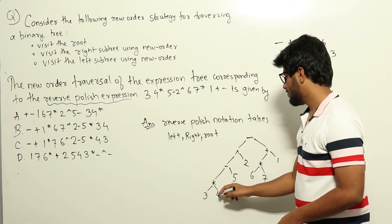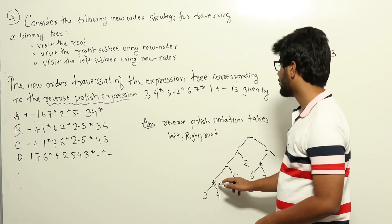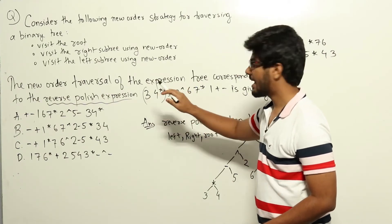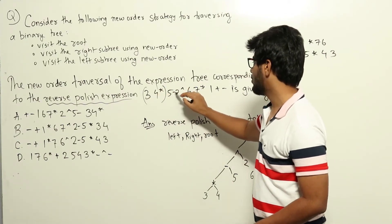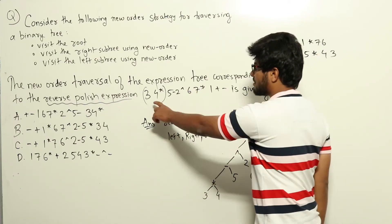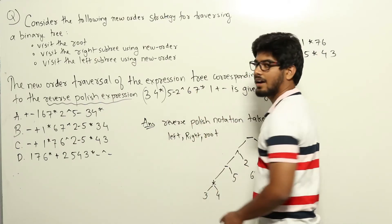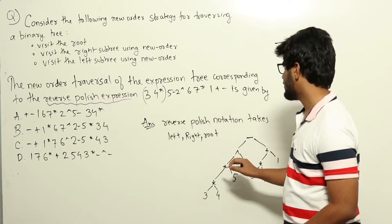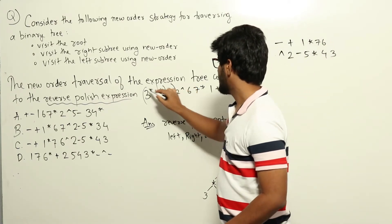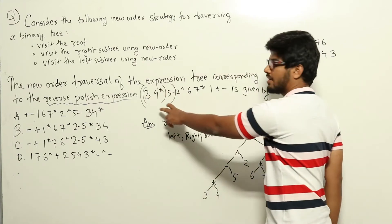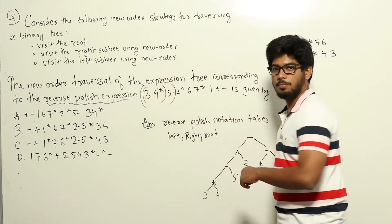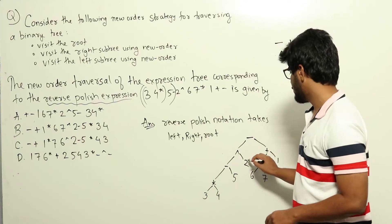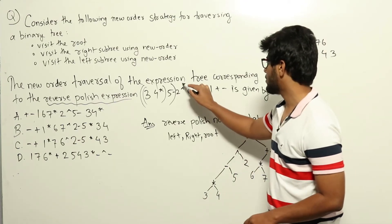I'll draw it like this: 3, 4, and then star as the root. After this part, we see 5 and then the operator minus — meaning this subtree is the left, 5 is the right subtree, and minus is the root, drawn here like this. Again after this we have this part, then 2 and then the power operator, so that will be drawn as the left subtree, then 2, and then the power operator as root.